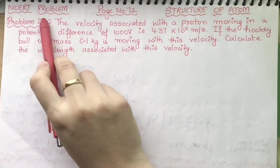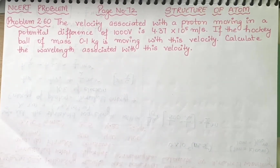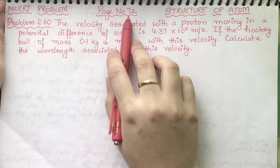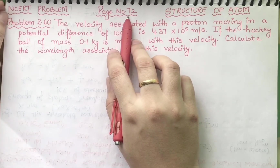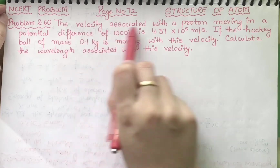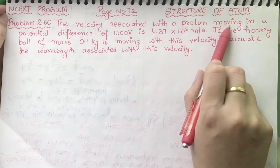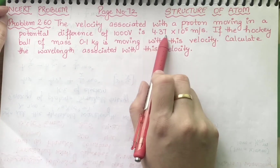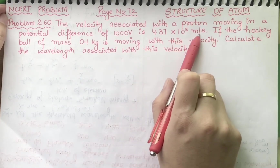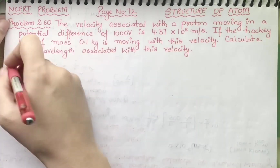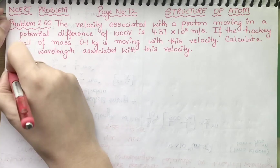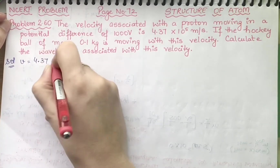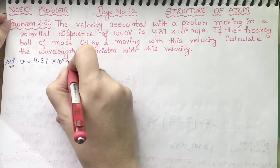Here we have NCERT problem 2.60 from page number 72. We are talking about the velocity associated with a proton moving in a potential difference of 1000 volts, which is 4.37 into 10 raise to power 5 meter per second. So velocity v is equal to 4.37 into 10 raise to power 5 meter per second.